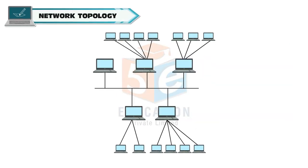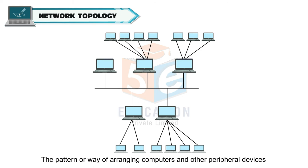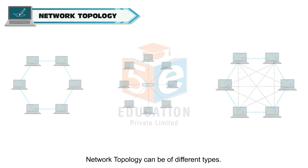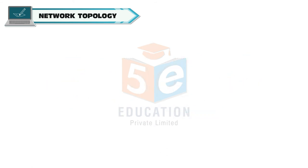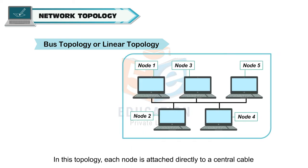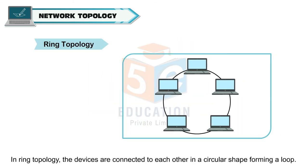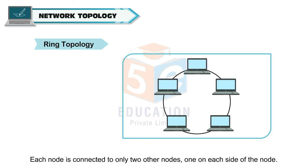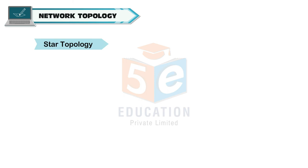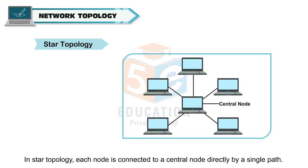Network Topology: the pattern or way of arranging computers and other peripheral devices to form a network is known as Network Topology. Network Topology can be of different types. Bus Topology or Linear Topology: each node is attached directly to a central cable, which is the common communication medium for all attached nodes. Ring Topology: devices are connected to each other in a circular shape forming a loop; each node is connected to only two other nodes, one on each side. Star Topology: each node is connected to a central node directly by a single path.